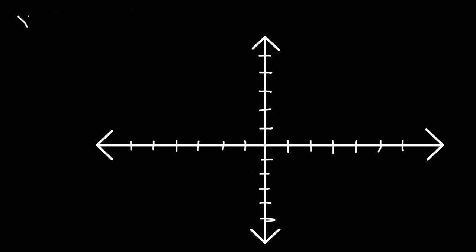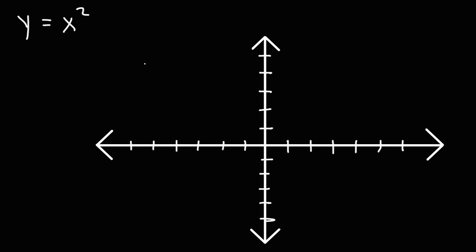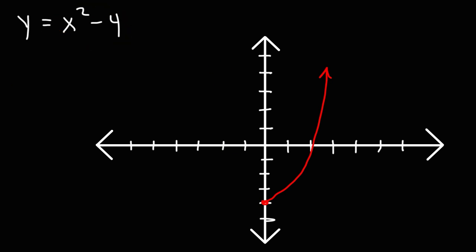Now, what if we have a parabolic or quadratic function like y equals x squared? It helps to know the parent shape — x squared looks like a parabola. Now what about y equals x squared minus 4? This graph has been shifted 4 units down the y-axis, so instead of starting at the origin, it's going to start at negative 4. You can draw a rough sketch — it's simply been shifted 4 units down.